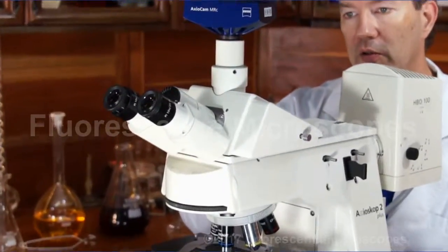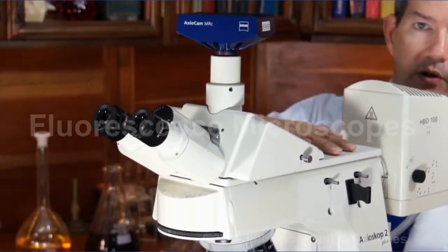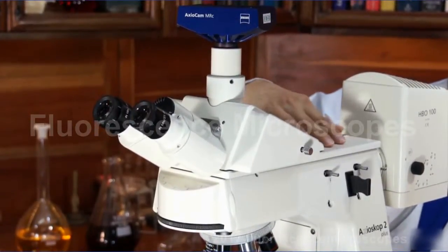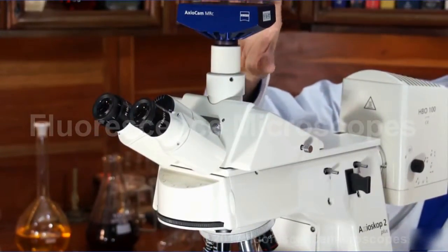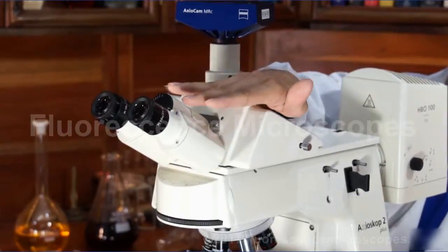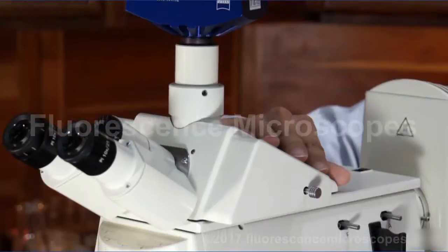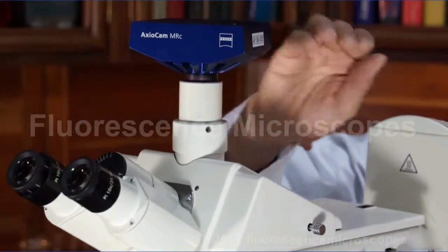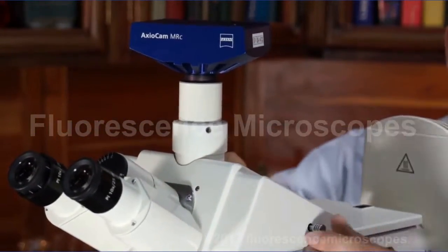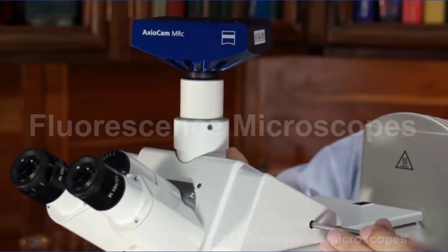They normally use them on the Axial Plans, but they're adaptable to the Axial Scope version as well. It allows 100% of the light to the camera port, or 100% of the light to the eyepieces, or a split with 80-20: 80% of the light to the camera port, 20% to the eyepieces. And this is your three-position knob.